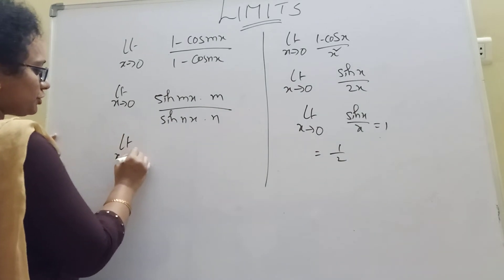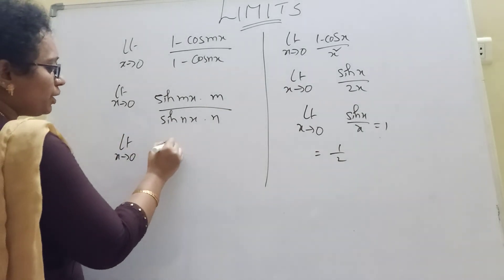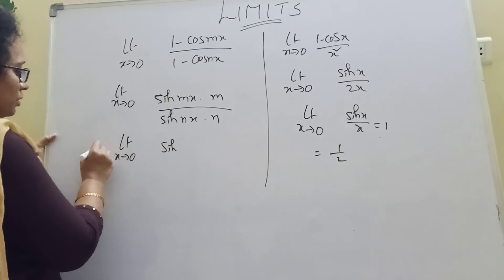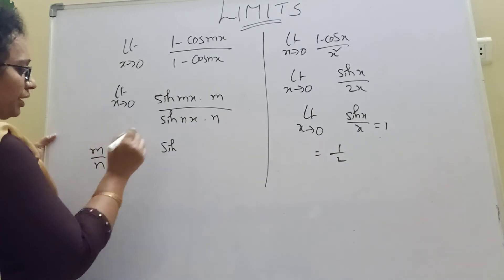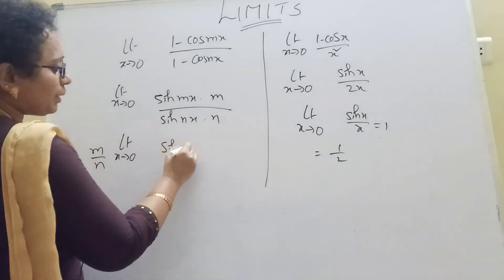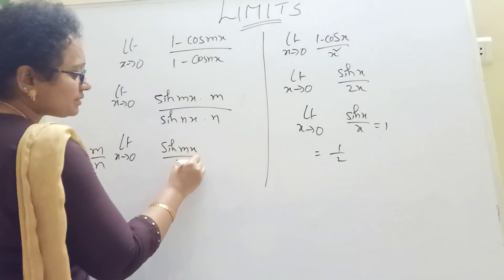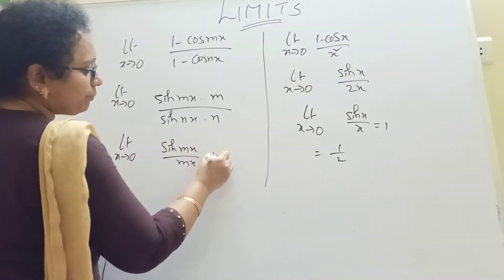So I will show you: limit x tends to zero, M by N — one times x — sin Mx by Mx, into Mx.